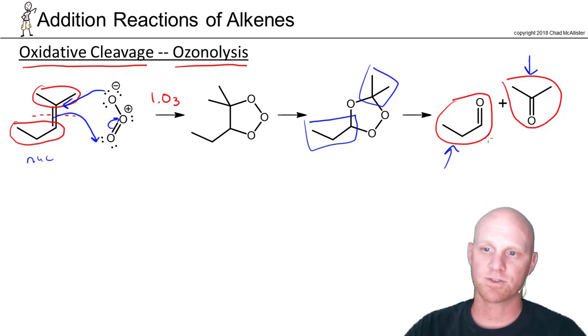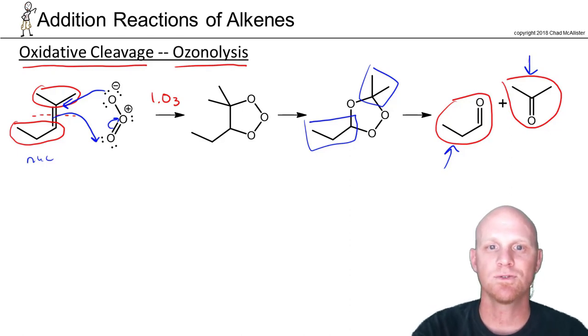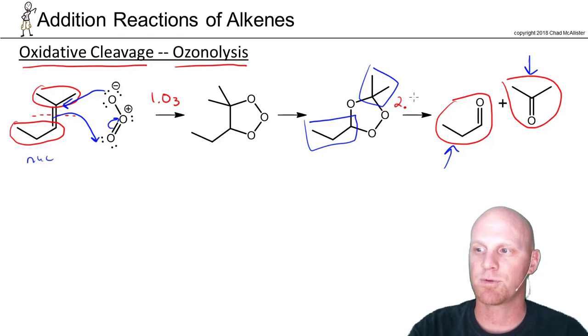But the big thing is how do we predict products with this? Well, it turns out there's actually two steps to this. This is step one. Step two over here. So in this example required a reducing agent. Reducing agent's DMS, which stands for dimethyl sulfide.